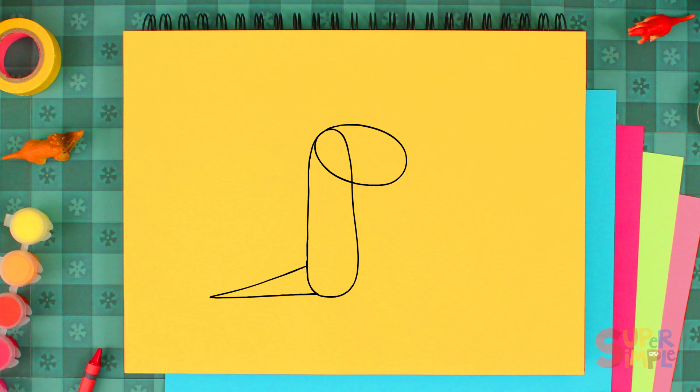Let's round that triangle out a little bit. And let's erase some of these lines so it's all connected. Now it's really starting to look like a Tyrannosaurus Rex.